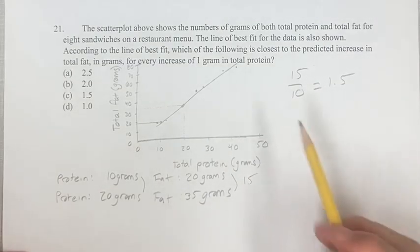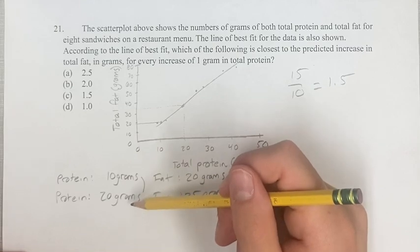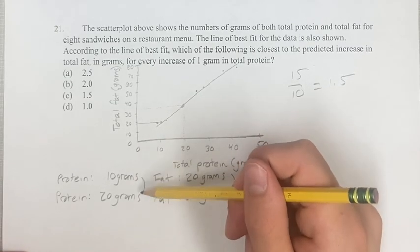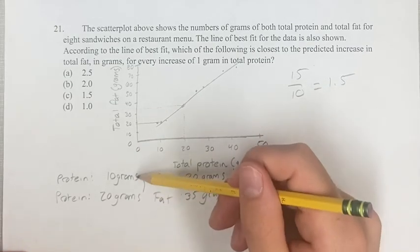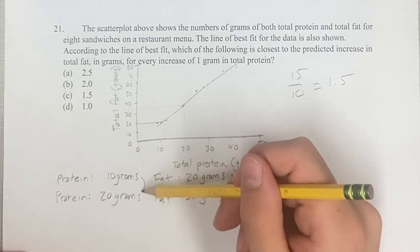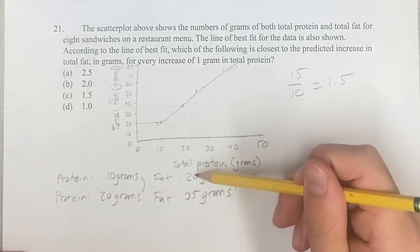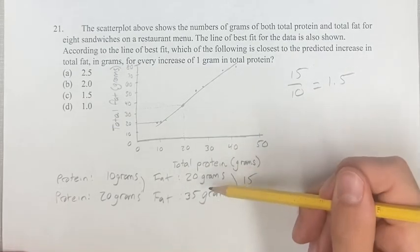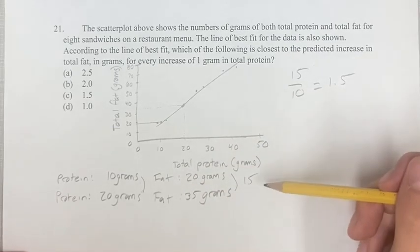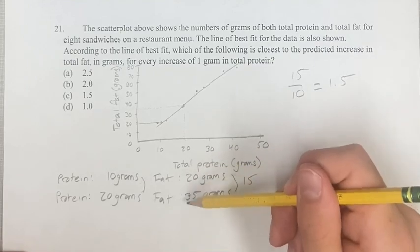So you can think of this as when we're going from 10 to 20, we're increasing by 1.5 ten times. So it'd be, we're increasing by 1.5 for the fat, so 20, 21.5 adding 1.5, 23 adding another 1.5, and we do that 10 times and then you get to 35.